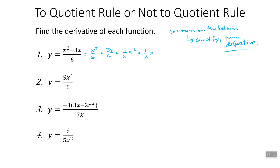Now to take the derivative — y prime — we're just doing power rules, which is generally much easier than quotient rules. If we didn't notice this and did it as a quotient rule, the derivative of 6 would be 0 and that second term on top would go away, and it would all cancel to the same thing. Bringing down the 2: 2 times one sixth is one third x, plus the derivative of one half x, which is just one half. There's our answer.